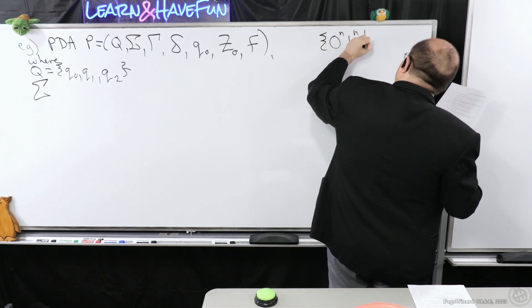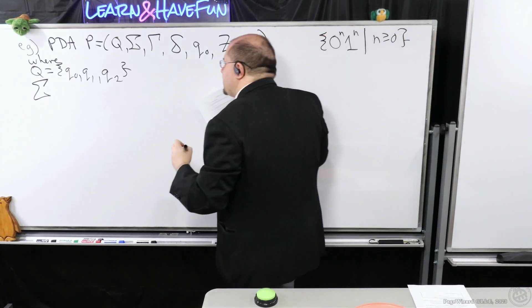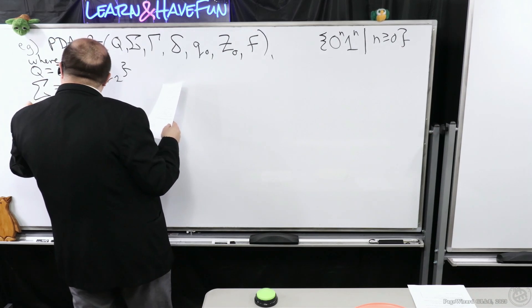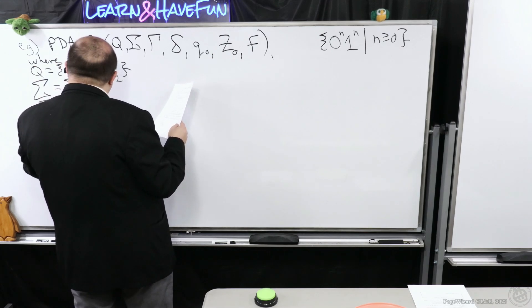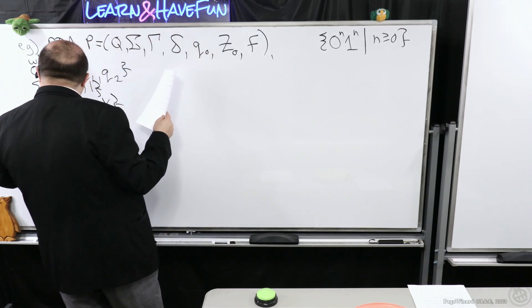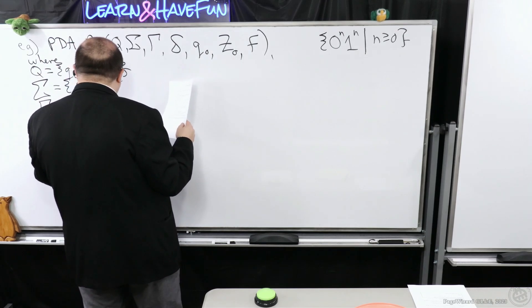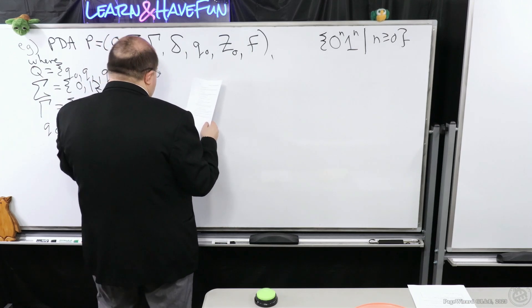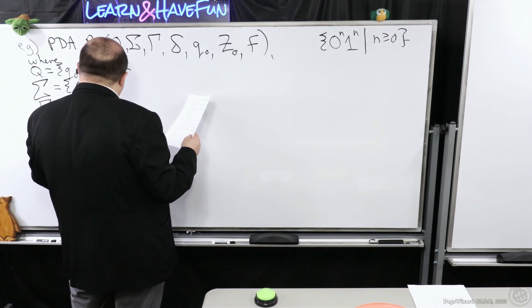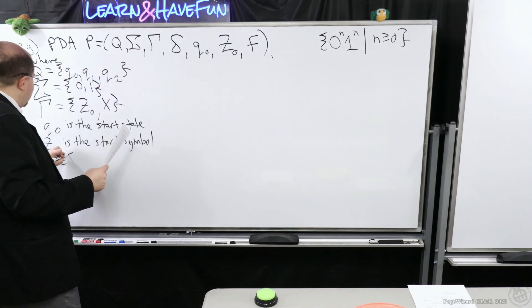0 to the n, 1 to the n, such that n is greater or equal to 0. Our input symbols are going to be 0, 1. Our tape alphabet is going to be Z0 or X. We're going to have Q0 is the start state. And Z0 is the start symbol.